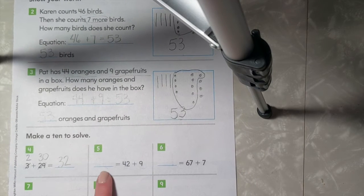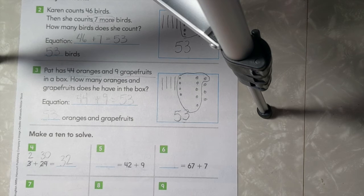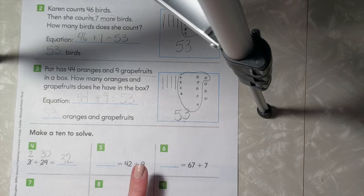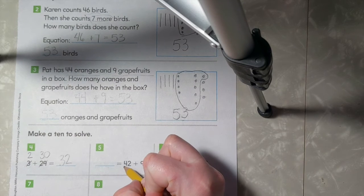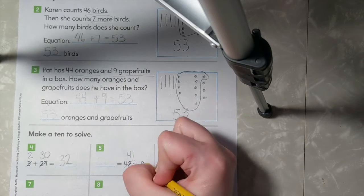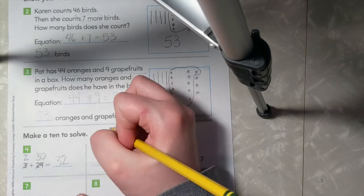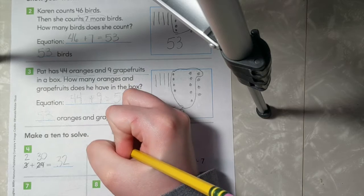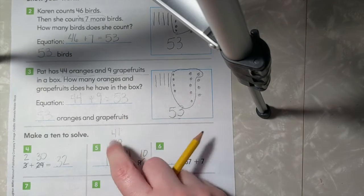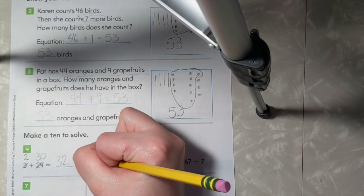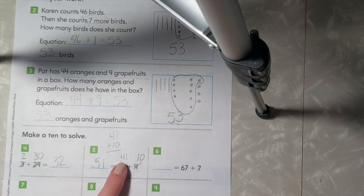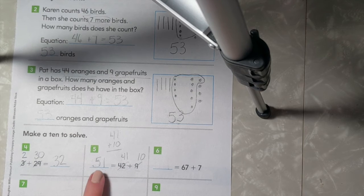Number 5, blank equals 42 plus 9. Just like in number 4, I see that I have a number 9, and if I add one more, that will give me 10. So I'm going to borrow from 42. This will become 41, and this will become 10. Next, what I can do is I can add them together. I'm going to add my 1s. 1 plus 0 equals 1. 4 plus 1 equals 5. So 42 plus 9 is the same as 41 plus 10, and it will give me 51.